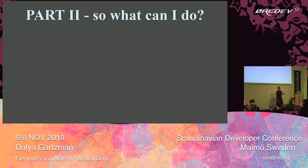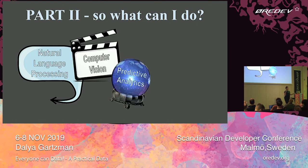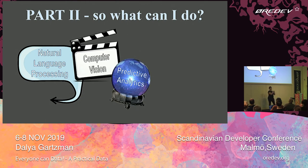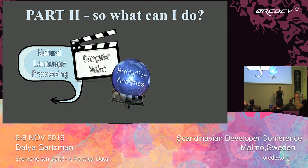So what can we do? In this second part of my talk, I'm going to explore three major subdomains of data science: natural language processing, computer vision, and predictive analytics. For each one of them, I'm going to give you a link to a free online learning course that I personally recommend, some tools you can use in this context, and an idea for a project.